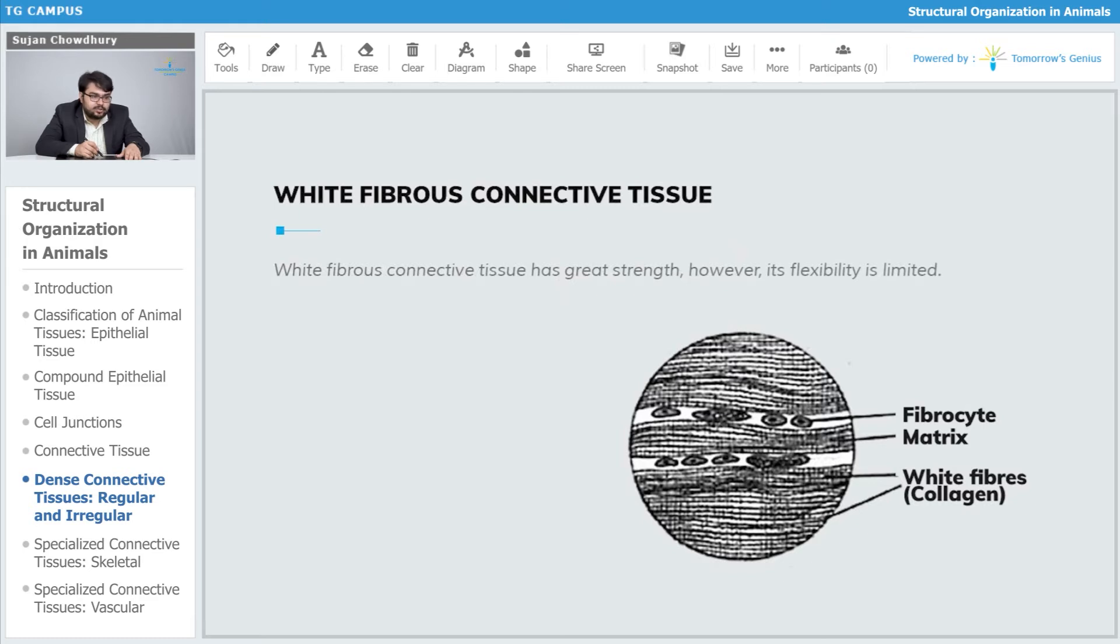White fibrous connective tissue has great strength; however, its flexibility is limited. This type of connective tissue provides limited flexibility though its strength is immense. It is present in areas of the body where strength of the tissue system is highly required.